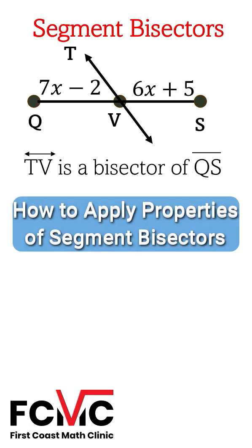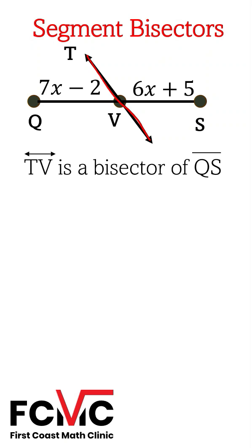How do we apply properties of segment bisectors? Line Tv is a segment bisector of Qs. So let's use that information to solve for x and then find some information about our segment Qs.